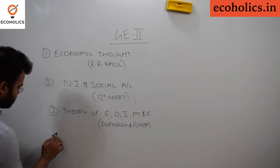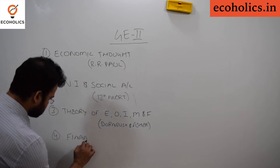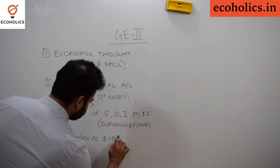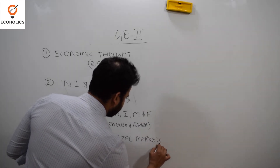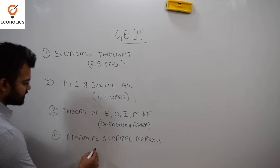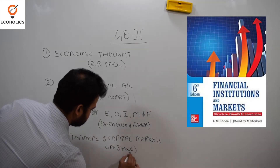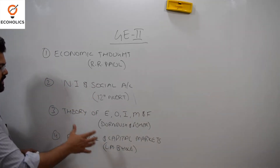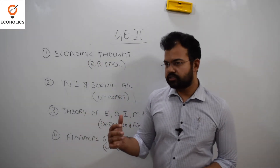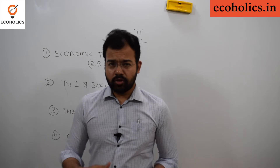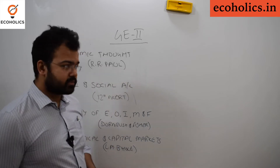The fourth topic is Financial and Capital Markets. For financial and capital markets, the best book is L.M. Bhole — a very comprehensive book, very helpful in understanding the concepts of financial and capital markets. Although it is a very bulky book, you can take certain points and topics that are mentioned in the syllabus.